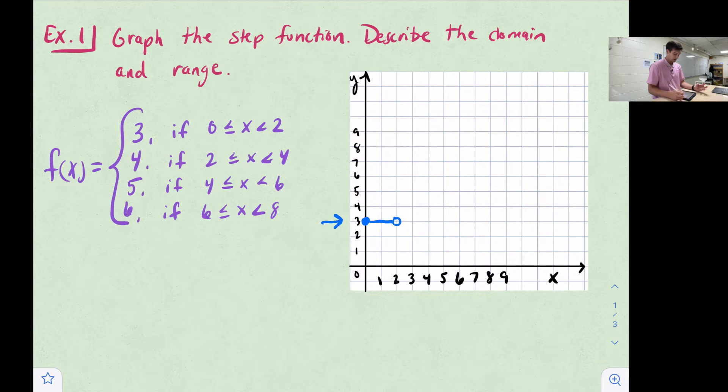From there, we have y is equal to four if x is between two and four. Now we move up to four. We have a closed circle when x is two, and an open circle when x is four. Now we draw our line to connect those two points. We have our next piece or our next step.